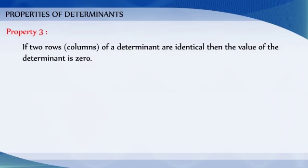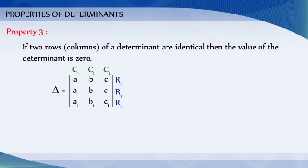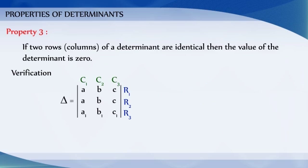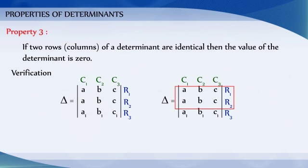Property 3: If any two rows or columns of a determinant are identical, then the value of the determinant is 0. If we interchange the identical rows or columns of determinant delta, then delta does not change. However, by Property 2, it follows that delta has changed its sign. Therefore, delta equals minus delta, which implies delta equals 0.